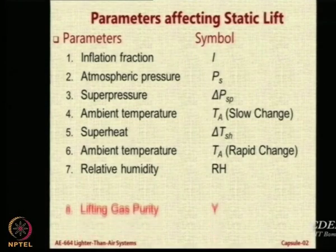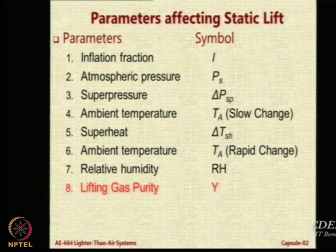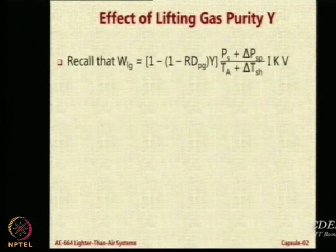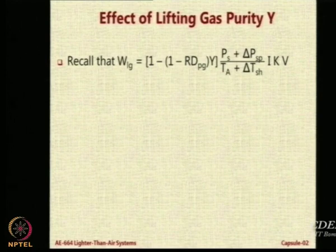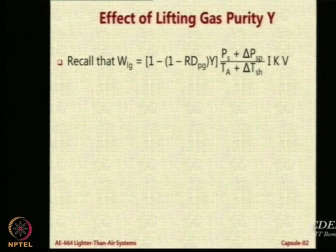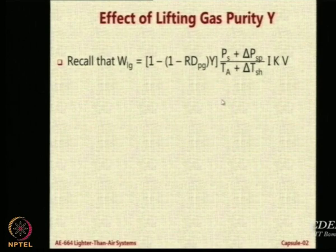We have looked at all the 7 parameters; now we will look at the lifting gas purity Y. For this, you will have to go back to your notes and bring out this formula — the bigish formula which tells you about the weight of the lifting gas in terms of the purity of the gas Y, ratio of pressure plus superpressure, temperature plus superheat, into I into K into V. RdPg is the relative density of the pure gas — a fixed number depending on whether you use hydrogen or helium or any other lifting gas.